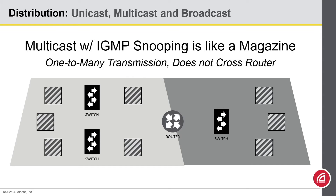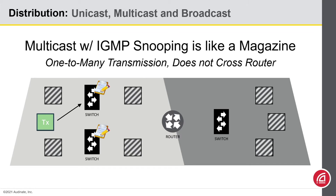Multicast transmissions aim to split the difference between Unicast and Multicast. Think of it like a magazine subscription — devices that are interested in a particular stream will subscribe to it. The switch makes a note of that and coordinates with the other switches to build the distribution list. When the data for that transmission is sent, the switches can look at their distribution lists. The first switch realizes it only needs to send the stream to the second switch, and that second switch knows exactly which devices wanted that stream.